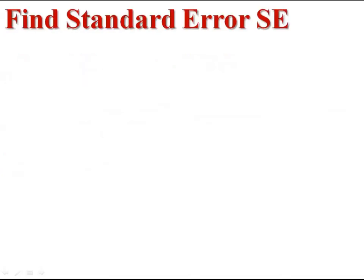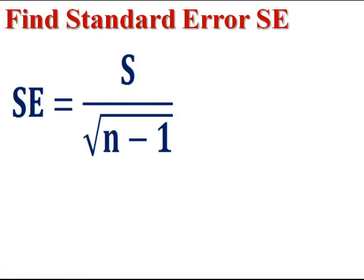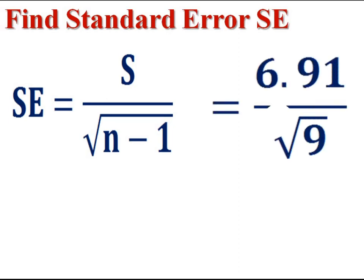Then find standard error SE for calculating our test statistic. Standard error SE is equal to standard deviation S divided by square root of N minus 1. That is equal to 2.3. It is the standard error. We computed the standard error to calculate the test statistic T.